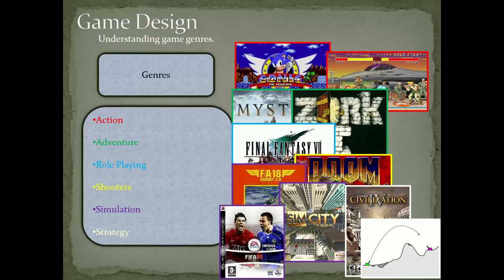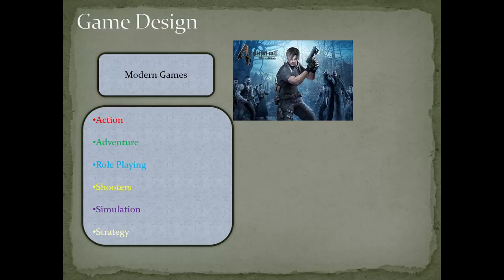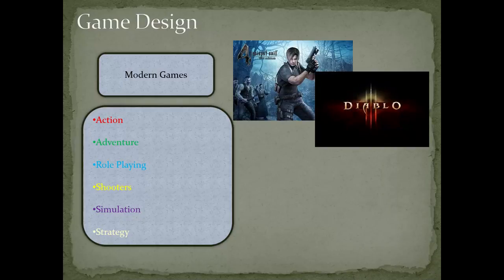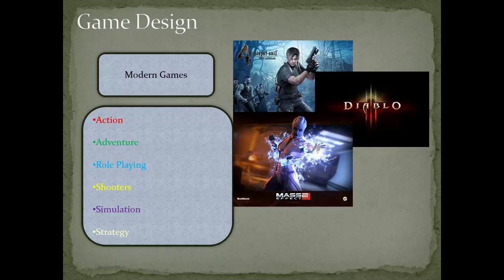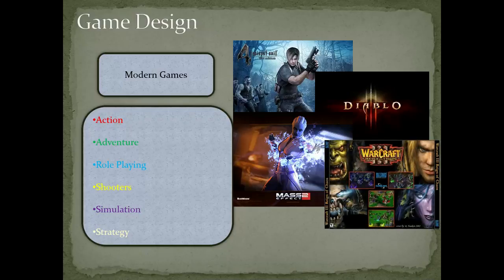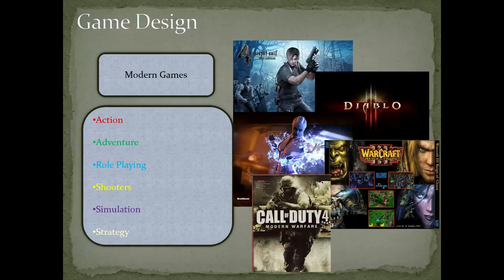Let's look at some modern games. We've got Resident Evil 4, which tends to bridge genres — you'll see elements of action and shooting, and a little bit of adventure. Diablo 3 bridges the action and RPG genres. Most modern games hit one or two genres, or take elements from another genre and add it into a classic genre. Mass Effect 2 is an RPG shooter with some elements of strategy. Warcraft 3 bridges real-time strategy plus RPG elements. And Call of Duty 4, which you'd think is a classic shooter, also bridges the aspect of simulation by trying to somewhat stay realistic to the real world.